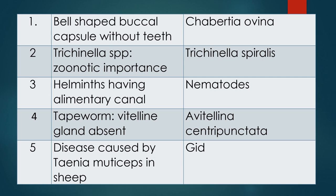Question three: Helminths having an alimentary canal. Generally cestodes and trematodes do not have an alimentary canal. Normally the nematodes have an alimentary canal. Question four: Tapeworm that has vitelline gland absent. Answer: The name of that tapeworm is Avitellina centripunctata.